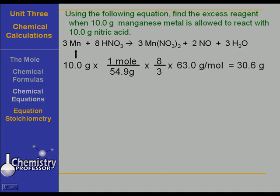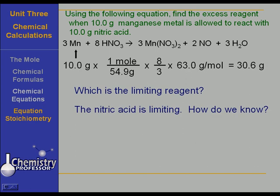Now, folks, we don't have 30.6 grams of nitric acid. We only have 10 grams of nitric acid. So, what is the limiting reagent? The limiting reagent is the nitric acid. We cannot possibly use this reaction to its entirety with manganese because we will run out of nitric acid first. The nitric acid is limiting. How do we know? Just exactly what we said. We don't have a sufficiency of the nitric acid to react with that 10 grams of manganese. Therefore, the manganese is in excess.